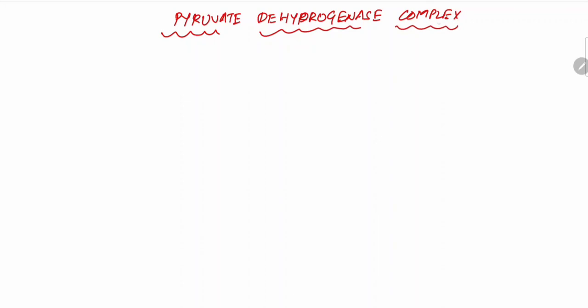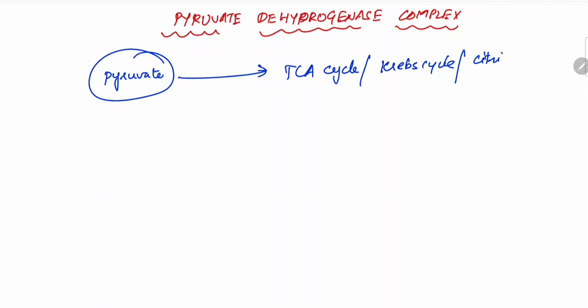As we all know, in glycolysis the byproduct is pyruvate. This pyruvate enters into the TCA cycle, or the Krebs cycle, also called the citric acid cycle.